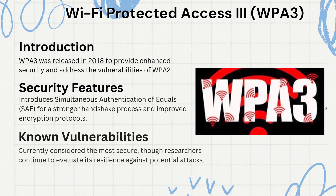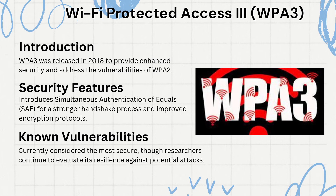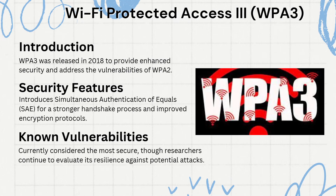This brings us to WPA3. Introduced in 2018, WPA3 addresses weaknesses in WPA2 with even stronger protections and introduces new features to simplify Wi-Fi security. One of the most significant enhancements is the implementation of Simultaneous Authentication of Equals, or SAE, which replaces WPA2's pre-shared key, PSK, method.